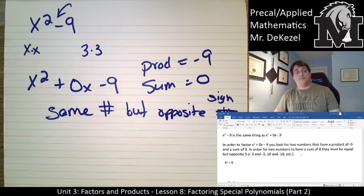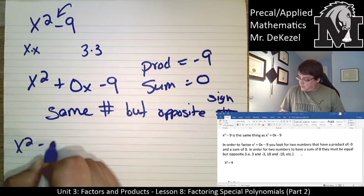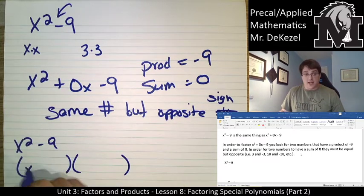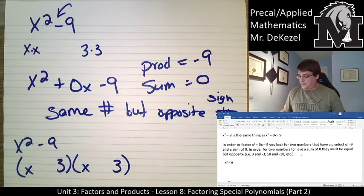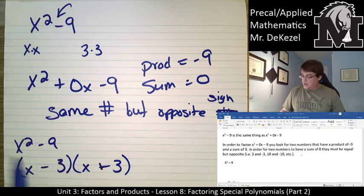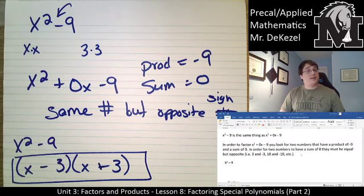The only way they can have a sum of 0 is if they are the same number but opposite sign. So 3 times 3 gets us 9. When we're writing it in our binomials, one would be positive and one would be negative. So if we have x squared minus 9, because they're both perfect squares, we can say x, x, 3, 3 — and to make them add up to 0 for our middle term, one of them has to be negative and the other positive. That's our answer for factoring x squared minus 9.